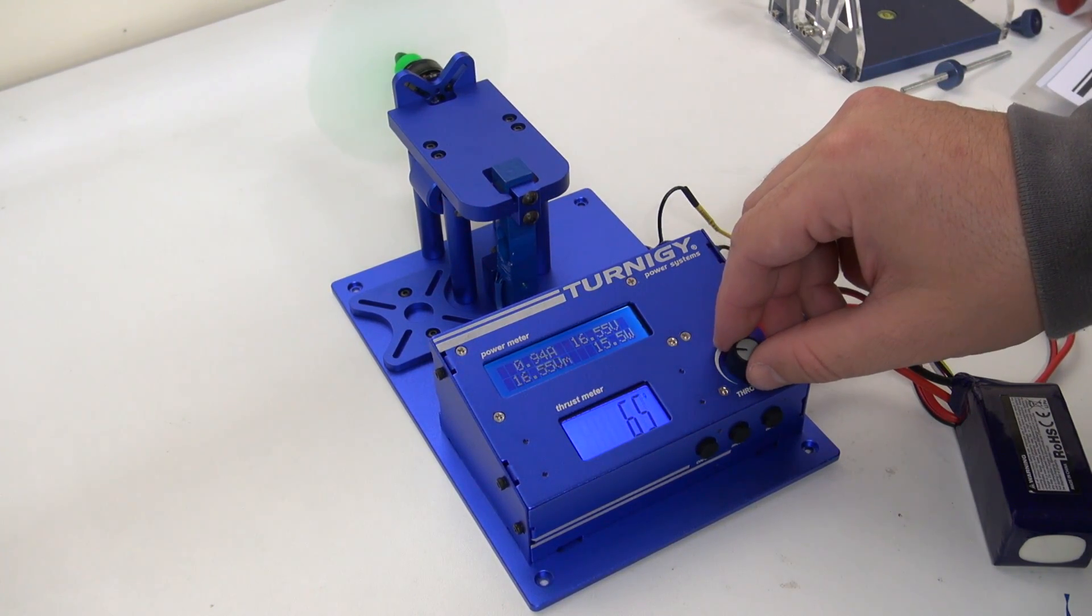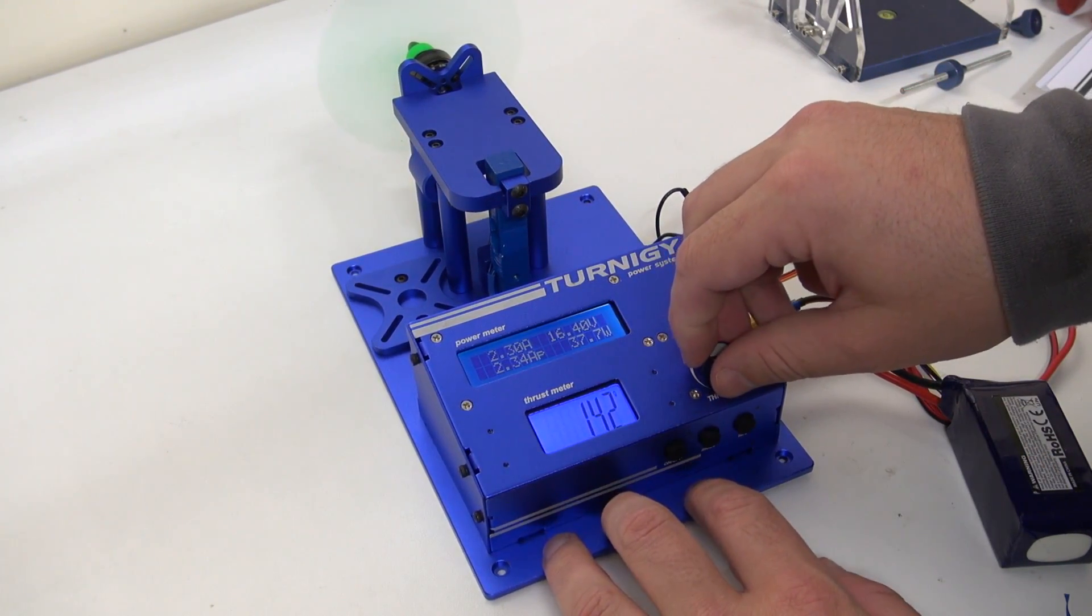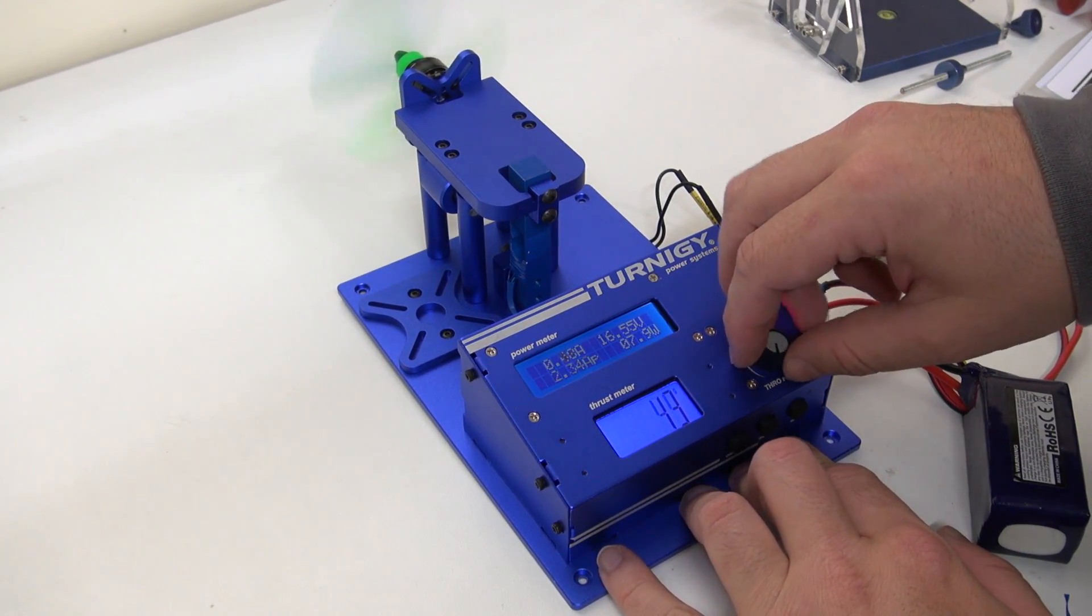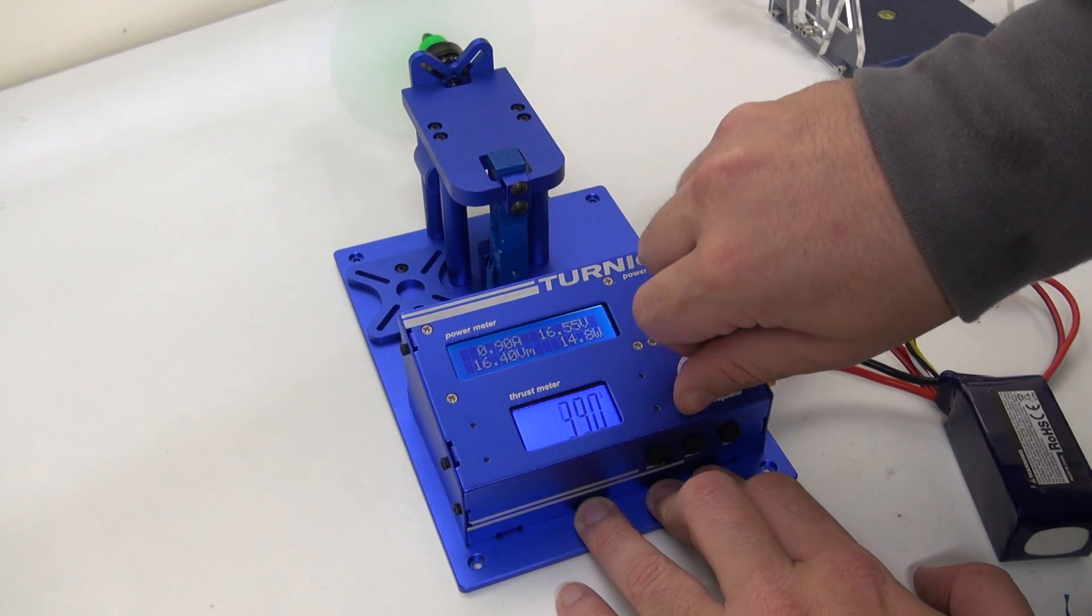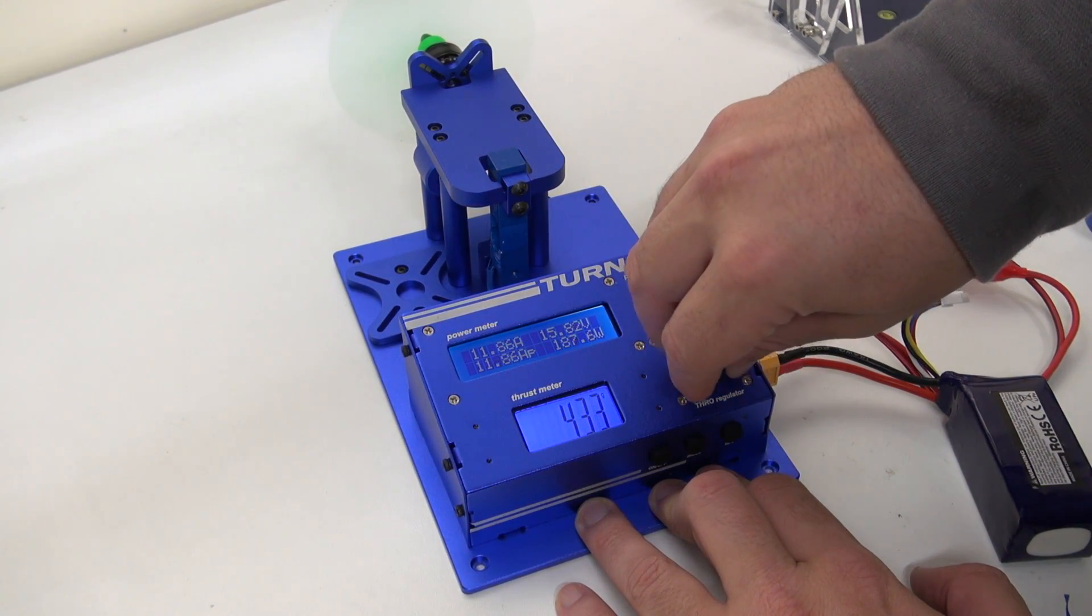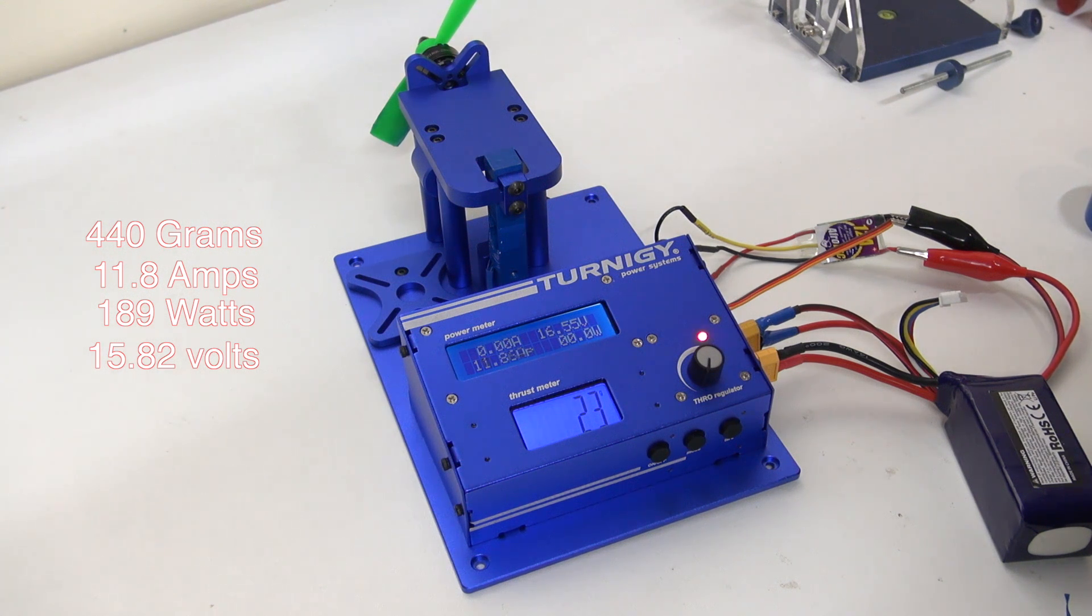I can immediately feel how much smoother this is now. So balancing those props is very, very important. It's not moving along the bench now. So let's do one more test again. I'll just turn this so you can see it. Okay, so with a balanced prop, AP, 11.86 amps. So slightly less amps that time, I think. WP is the peak watts, 189 watts. But it certainly felt a lot smoother.